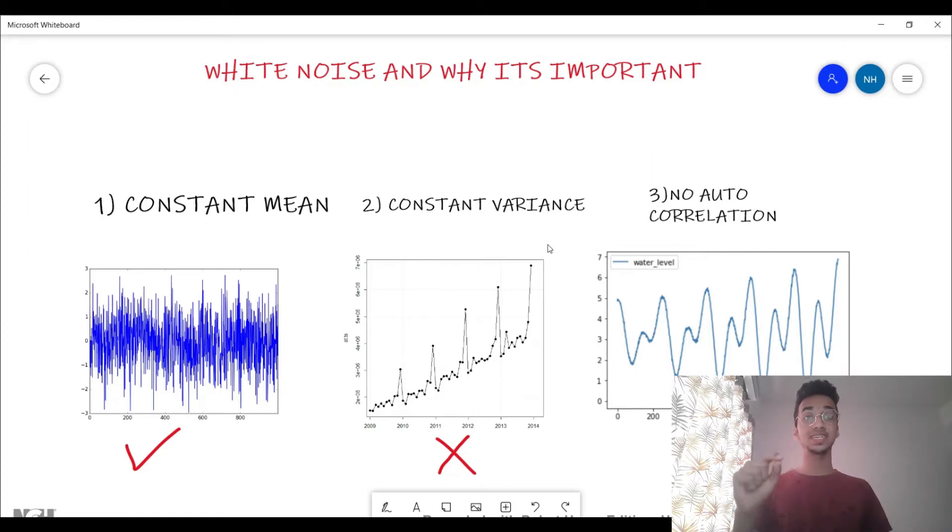I'm going to be discussing what the characteristics of white noise are and we're going to be discussing some plots that I've shown you over here and how to correctly identify them as well. So white noise essentially has three characteristics: the first one being constant mean and the second one being constant variance. The first two are pretty self-explanatory.